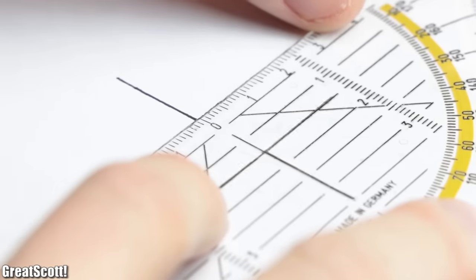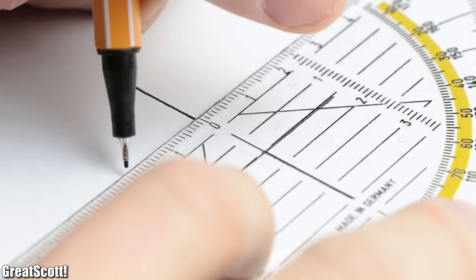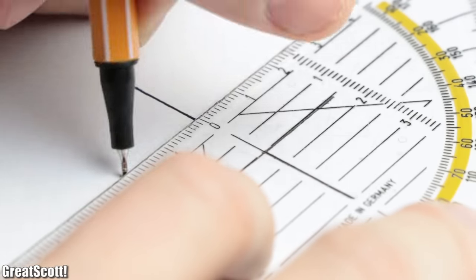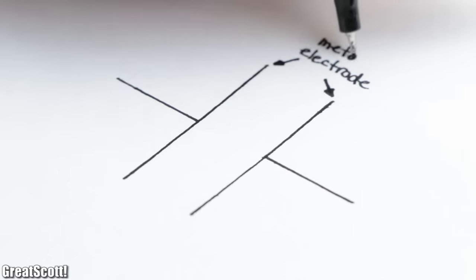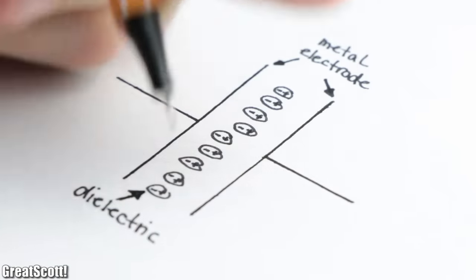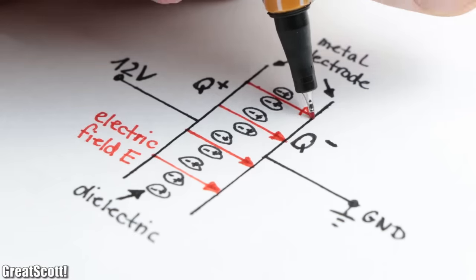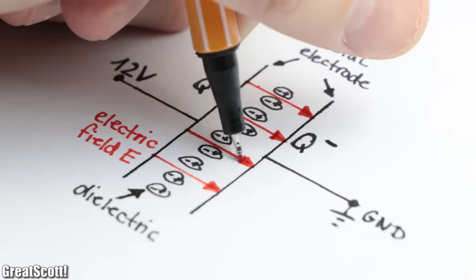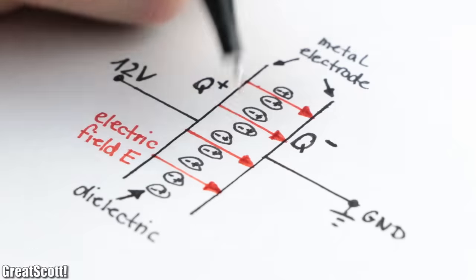Well, the reason is that while all capacitors share the same basic structure, which means they got two metal electrodes, which are separated by a non-conductive material called the dielectric, in order to create an electric field and thus store energy when a voltage is applied, their materials all differ.